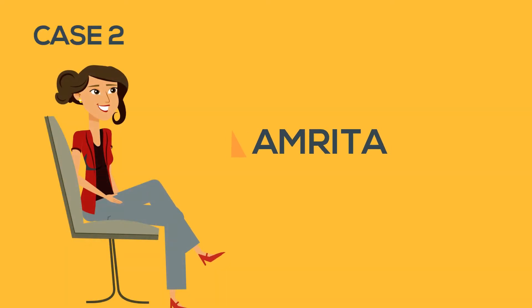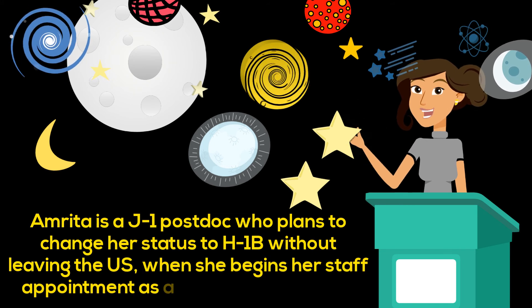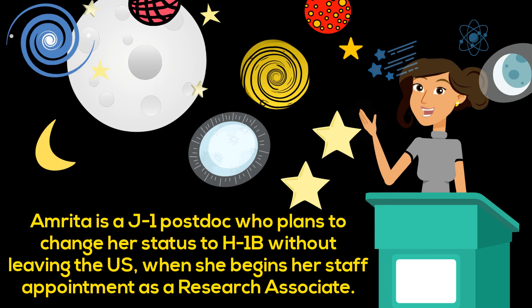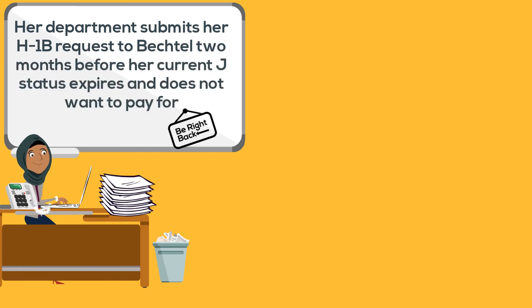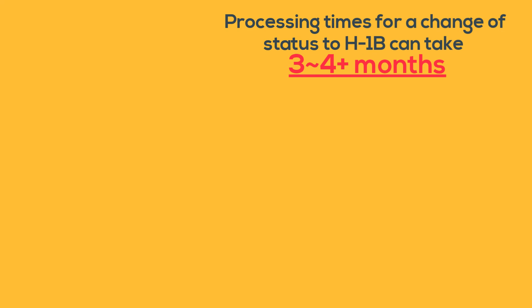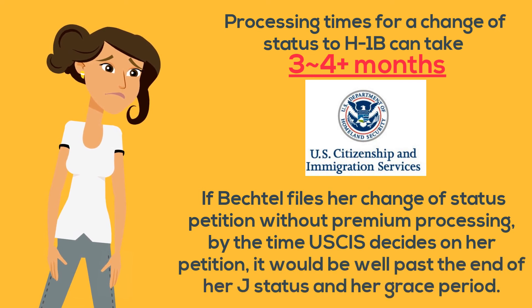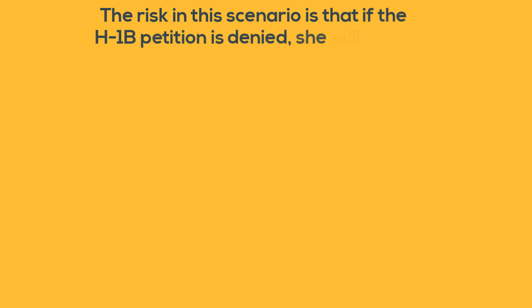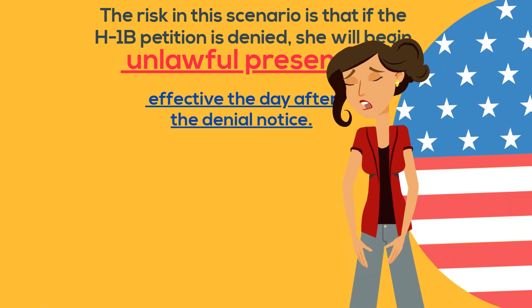The case of J-1 scholar Amrita. Amrita is a J-1 postdoc who plans to change her status to H-1B without leaving the U.S. when she begins her staff appointment as a research associate. Her department submits her H-1B request to Bechtel two months before her current J-1 status expires and does not want to pay for premium processing to receive a decision from USCIS within 15 days. Processing times for a change of status to H-1B can take at least three to four months. If Bechtel files her change of status petition without premium processing, by the time USCIS decides on her petition, it would be well past the end of her J status and her grace period. The risk is that if the H-1B petition is denied, she will begin to accrue unlawful presence effective the day after the denial notice, and she may also be subject to deportation proceedings.